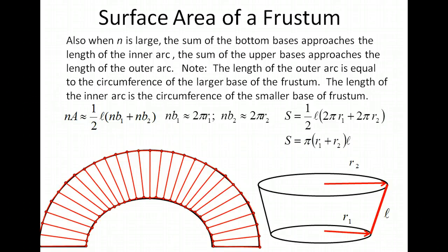Notice that the one half and the 2's that are inside the parentheses cancel out. Then we factor out the π and just move the slant height to the end. So we have π times the sum of the two radii of the frustum times the slant height of the frustum.